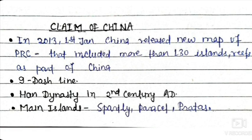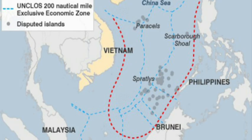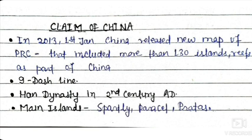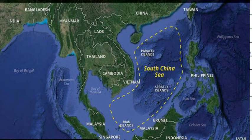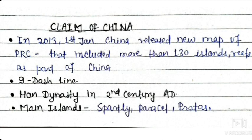On 1st January 2013, China released a new political map of the People's Republic of China that included more than 130 islands and reefs as part of China. They reference the nine-dash line, which they claim marks the boundary of China, and they provide historical evidence going back to the Han Dynasty in the second century AD, saying the majority of the South China Sea was then part of China.